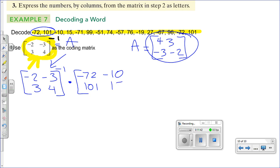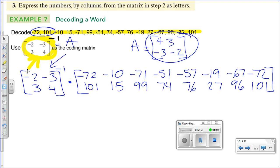You will need the inverse of this matrix. Actually, if we call this matrix A, I do have the inverse for that. I'm just trying to save time, so that's why I have it. 4, 3, negative 3, and negative 2. You can either use this matrix or type it on your calculator that way. So, it will be times, and you will start listing. The first two entries will be the first column. Like I said, you can also do it by row. It doesn't really matter. But, we're going to stick by column because that's the way my math lab is going to want you to do that. Negative 10, 15, negative 71, 99, negative 51, 74, negative 57, 76, negative 19, 27, negative 67, 96, negative 72, 101.